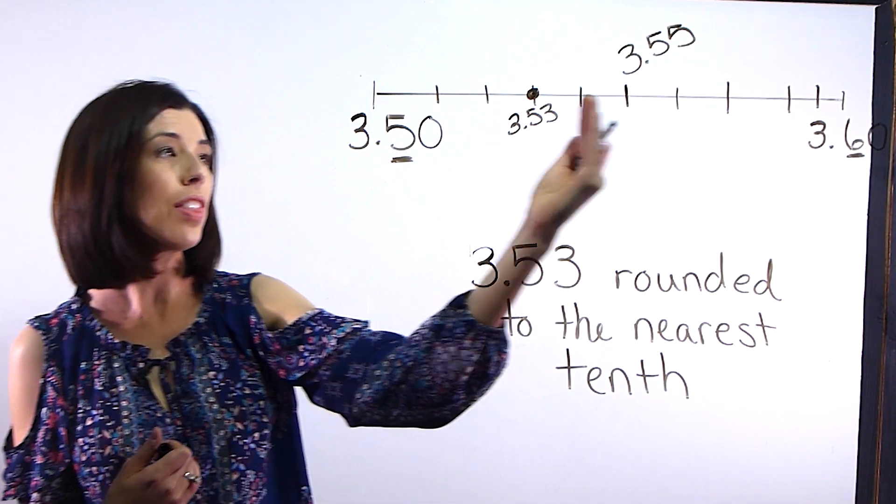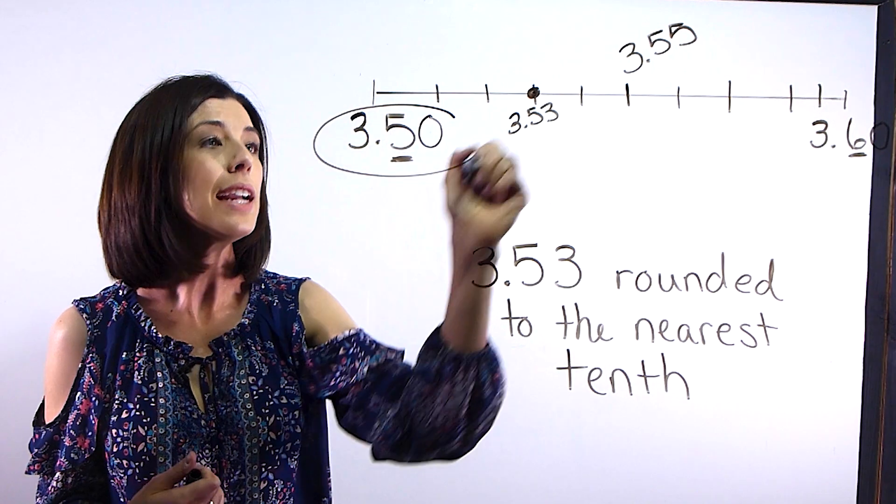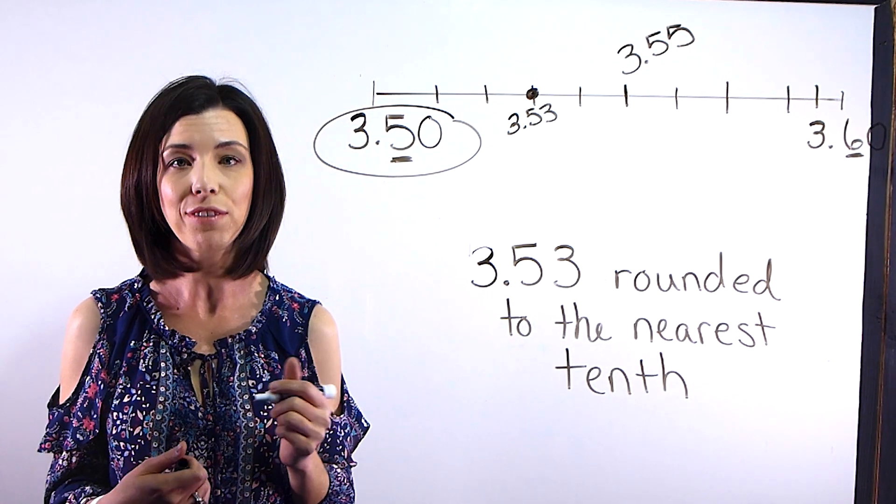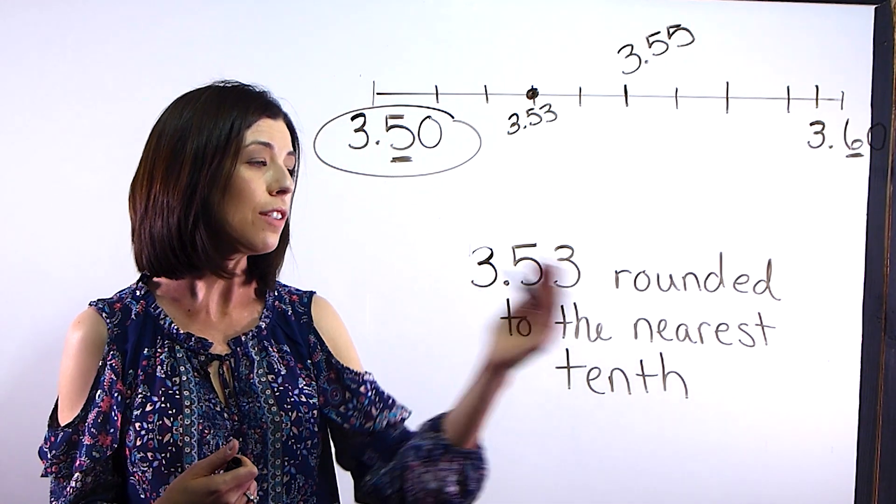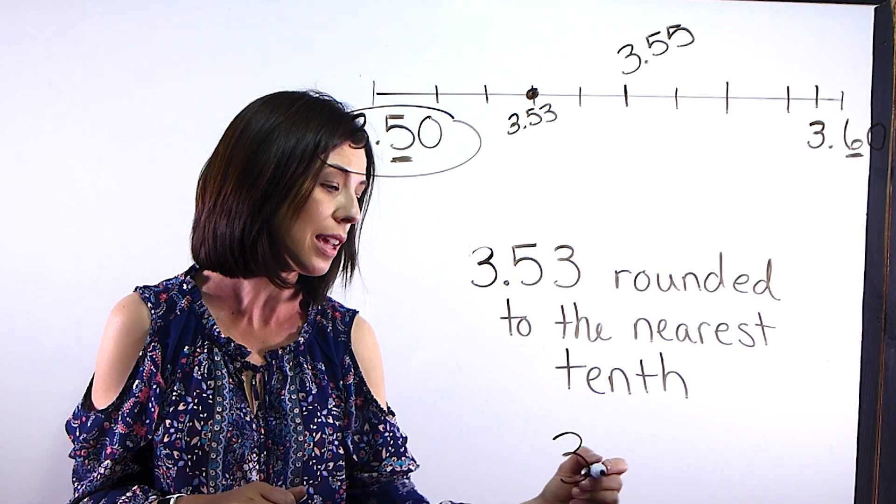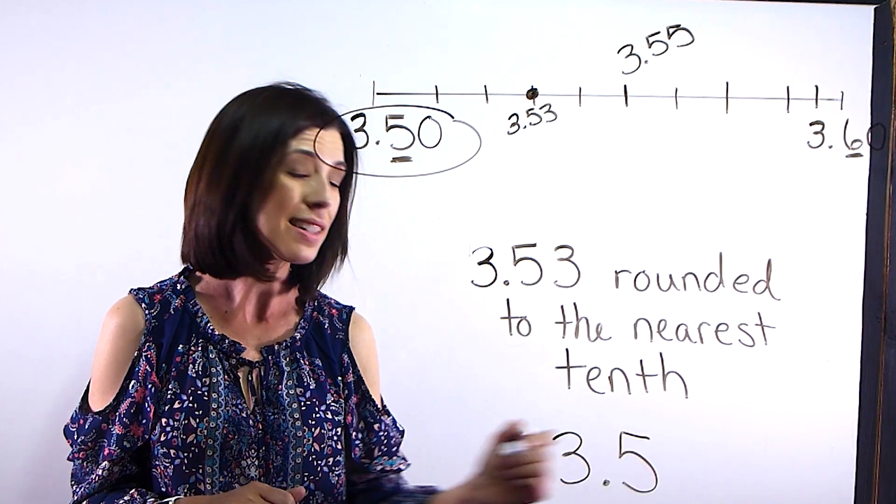Well, I can see that since it's on this side of the number line, it's going to be closer to 3 and 5 tenths. So 3 and 53 hundredths rounded to the nearest tenth is going to be 3 and 5 tenths.